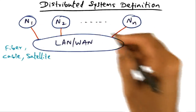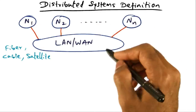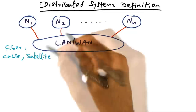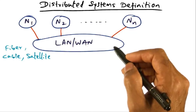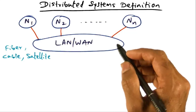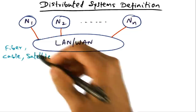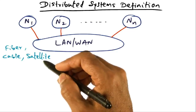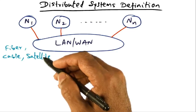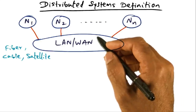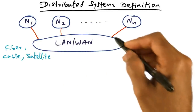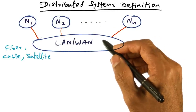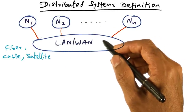A distributed system is a collection of nodes which are interconnected by a local area network or a wide area network. This local area network may be implemented using twisted pair, coaxial cable, or optical fiber. If it is a wide area network, it could be implemented using satellite communication or microwave links. The media access protocols available for communication on a LAN or WAN may be ATM or Ethernet and so on.